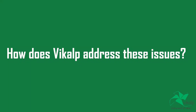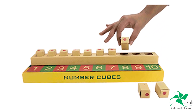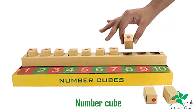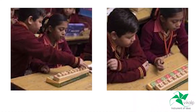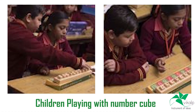In order to address this, our research team has developed number cubes. These are cubes placed on a number line. Children learn to recognize numbers by pointing fingers on numbers in the number line. Later, they put the corresponding number of cubes to understand how many cubes each number represents. Children get the feel that they are holding numbers and placing them in different positions, and gradually they understand the sequence of numbers with ease.